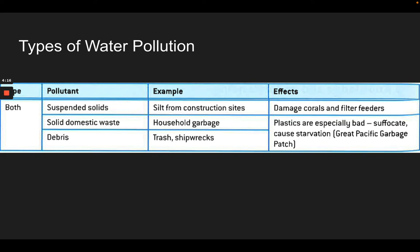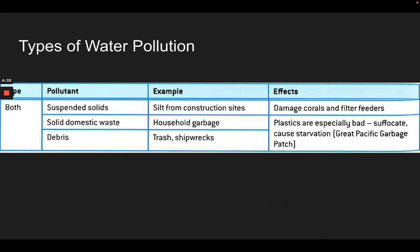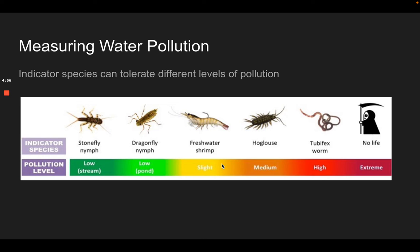We might also have solid domestic waste — there's a whole subtopic on household garbage disposal — and debris as well. You may have heard of the Pacific Garbage Patch, which is pretty famous at this point. Here's a nice graphic showing all those different types of pollution and where they might come from. You can think about how the water cycle just drops down over top of all this and sends these different pollution sources into the common water systems.